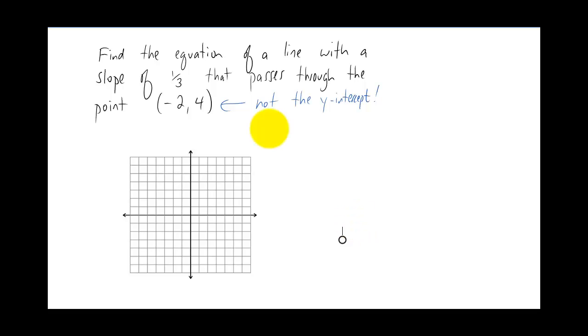And what you should notice right away is that the point that's given is not the y intercept. If we were given the y intercept this problem would basically be finished. We would just put it in that y equals mx plus b form, plug in our numbers and we'd be done. However we don't have the y intercept in this case. We do have a slope but we do not have a y intercept.